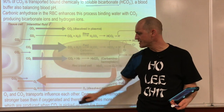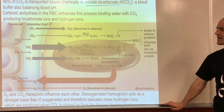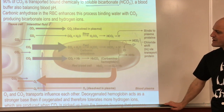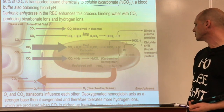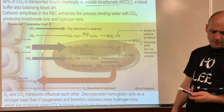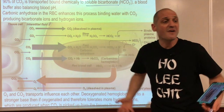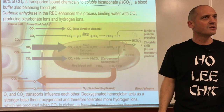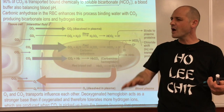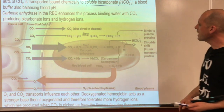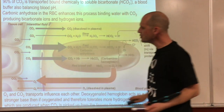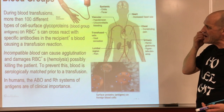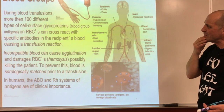Oxygen and carbon dioxide transport influence each other. Oxygenated hemoglobin acts as a stronger base than deoxygenated hemoglobin and therefore tolerates more hydrogen ions, which are produced when CO2 is picked up from the tissues. This fine-tuning ensures all tissues are properly perfused.